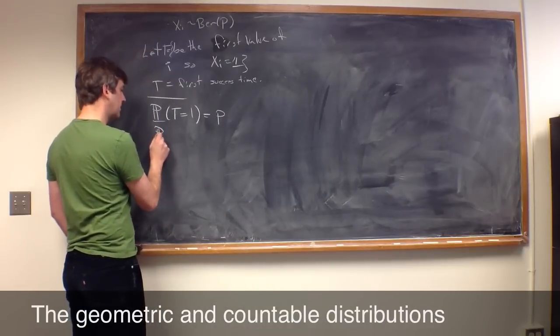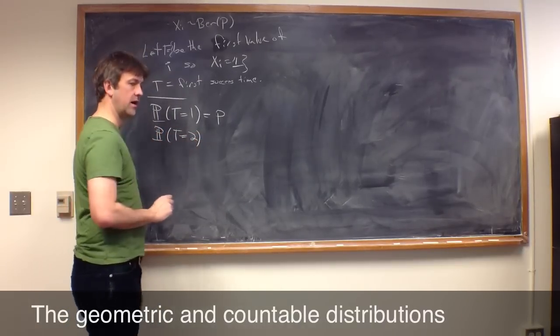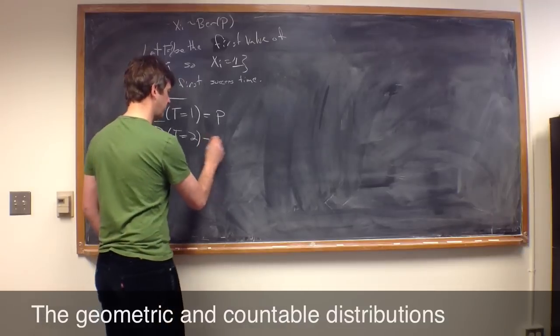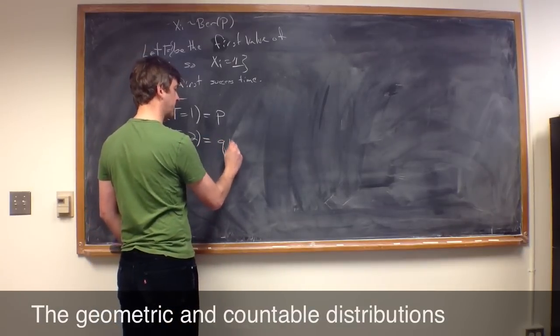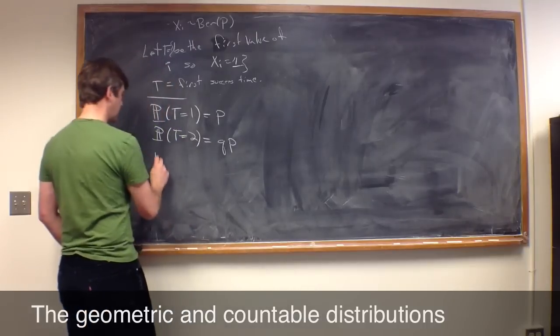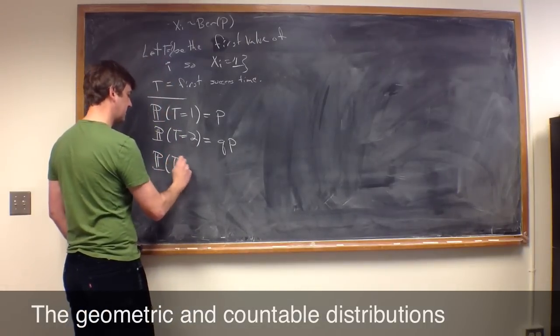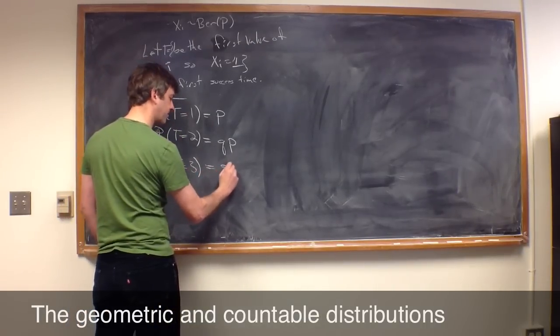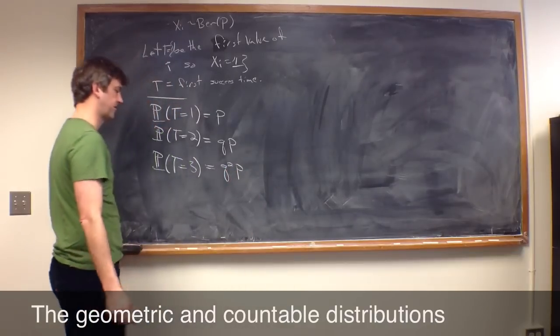What's the probability that t equals 2? Well, I have to fail on the first flip, which is q, and I have to get a success on the second flip. What's the probability that t equals 3? Well, I have to fail on the first two flips, and then be successful on the third flip.